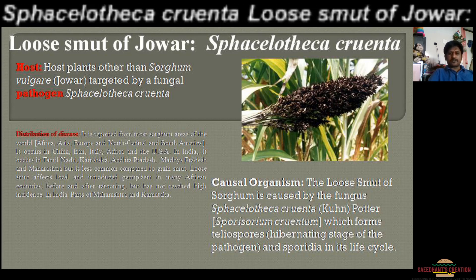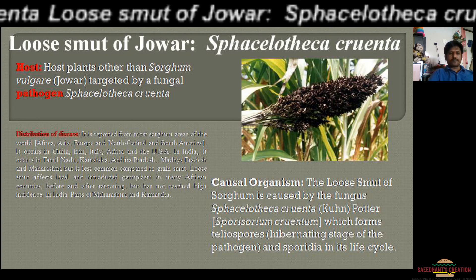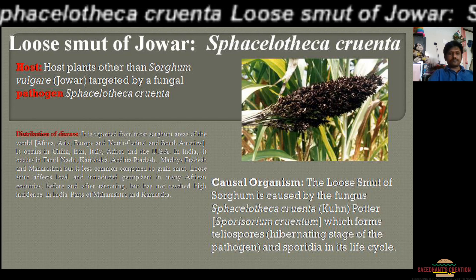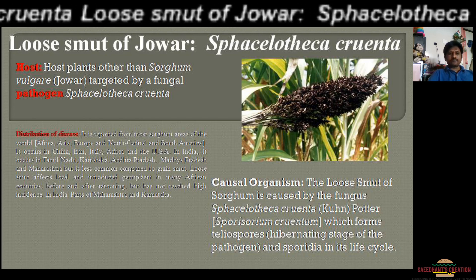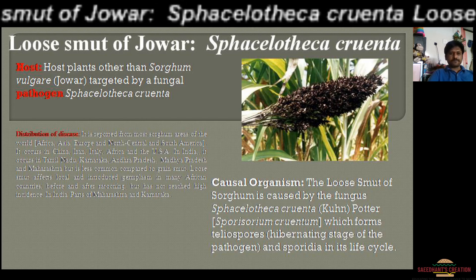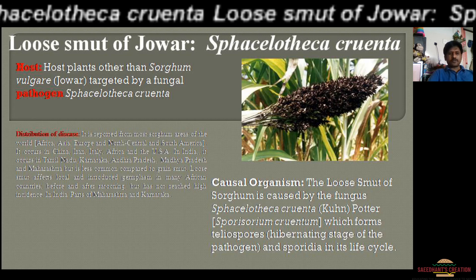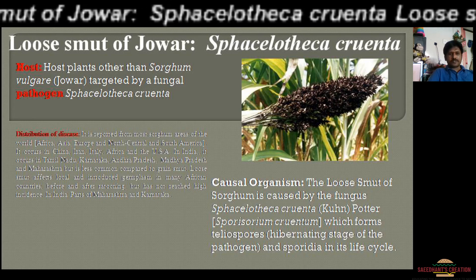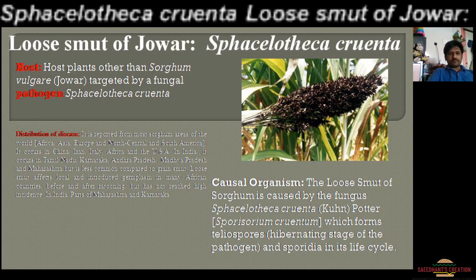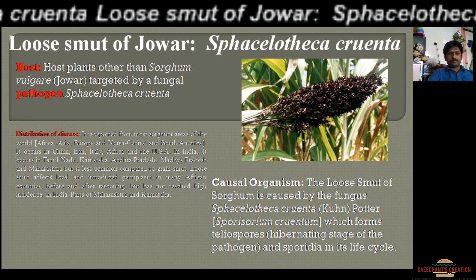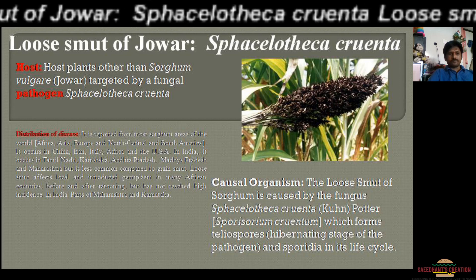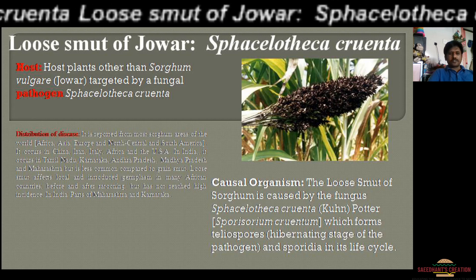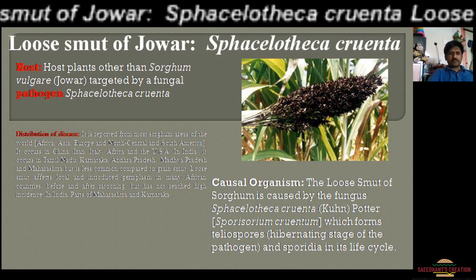The distribution of this disease is confined to the cultivating areas. As far as the host of loose smut of jowar is concerned, the name itself indicates jowar crop, Sorghum vulgare. It is always targeted by a fungal pathogen called Sphacelotheca cruenta. There are some other host species also, like Sorghum arundinaceum, Sorghum bicolor, Sorghum caffrorum, and Sorghum sudanense. There are a variety of jowar species, and the pathogen may also be reported in association with them.